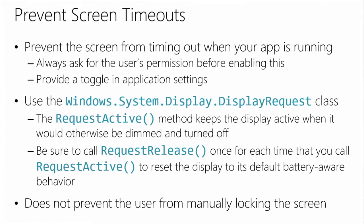To make sure the app doesn't timeout, it's actually quite simple. You call windows.system.display — there's a class called DisplayRequest and you simply call the RequestActive method whenever you need the app to stay in the foreground. And then when you're done, you call RequestRelease on the DisplayRequest class. This way you're basically telling the system you're done, so it can go back to the regular timeout and reset the count.